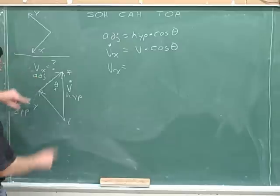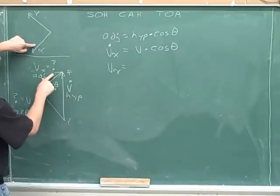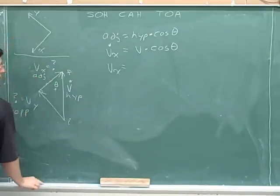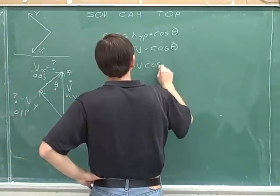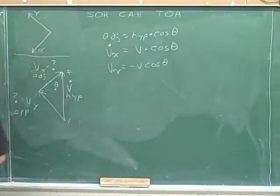Now we're ready to figure out the signs. V sub x is pointing up and to the right, but the positive x axis is down and to the left. So our x component is negative. And we already know what the magnitude is.